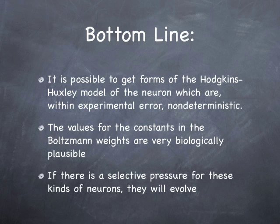So here's the bottom line. It is possible to get forms of Hodgkin-Huxley model of the neuron, which are within experimental error, non-deterministic. And the value for the constants and the Boltzmann weights are very biologically plausible. And even cooler, if there's a selective pressure for these kind of neurons, they will evolve. So the whole thing from top to bottom is very biologically plausible.